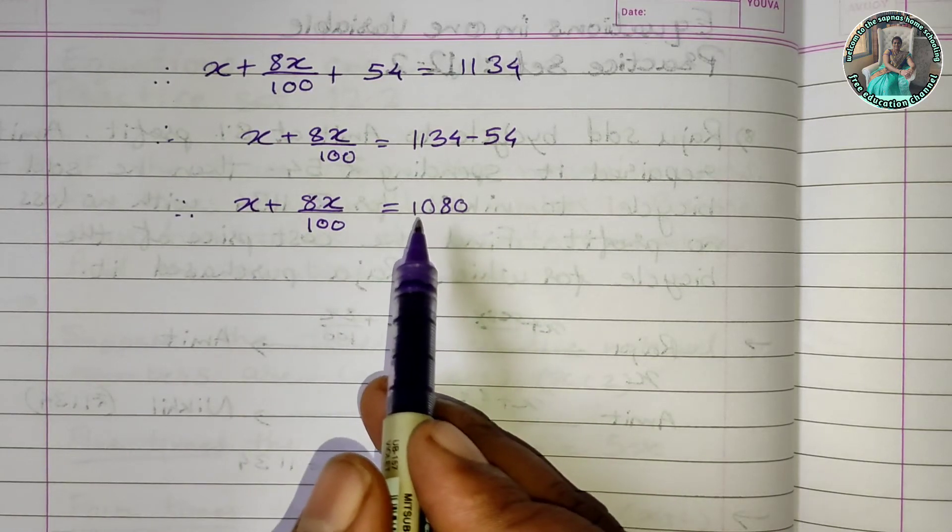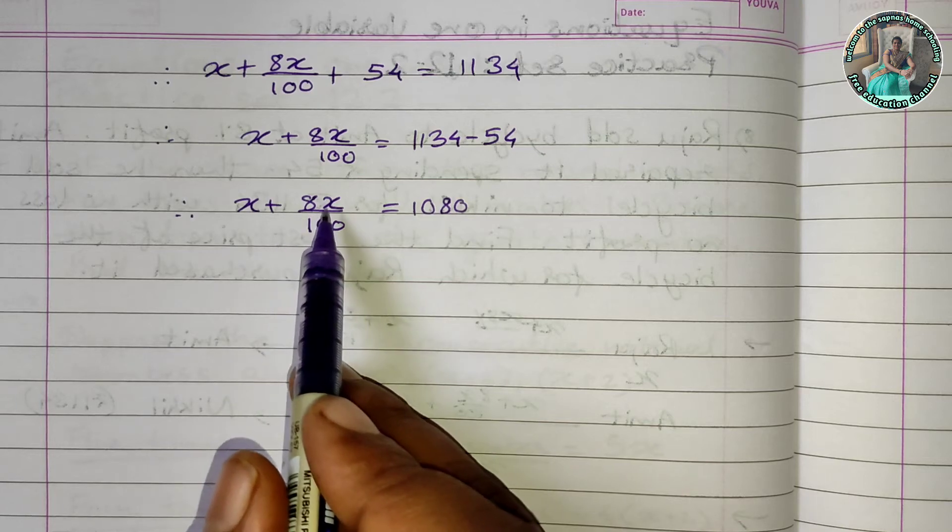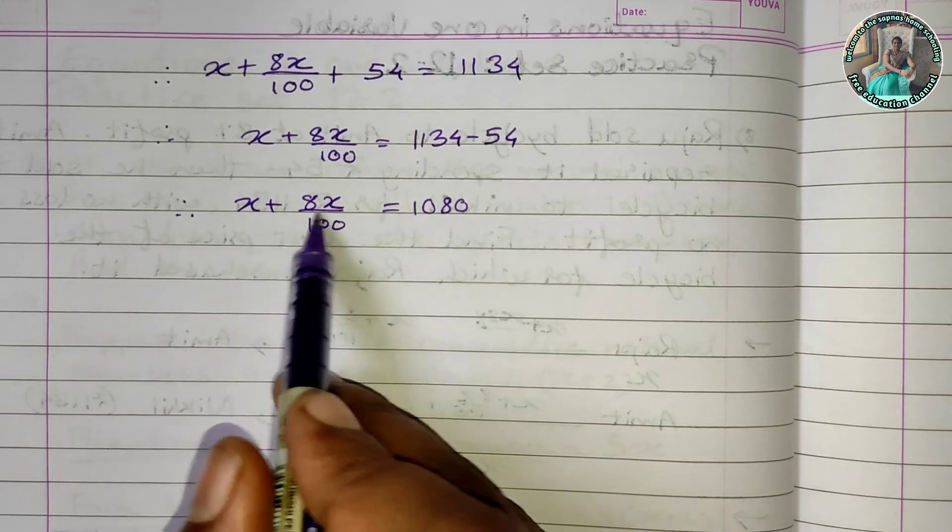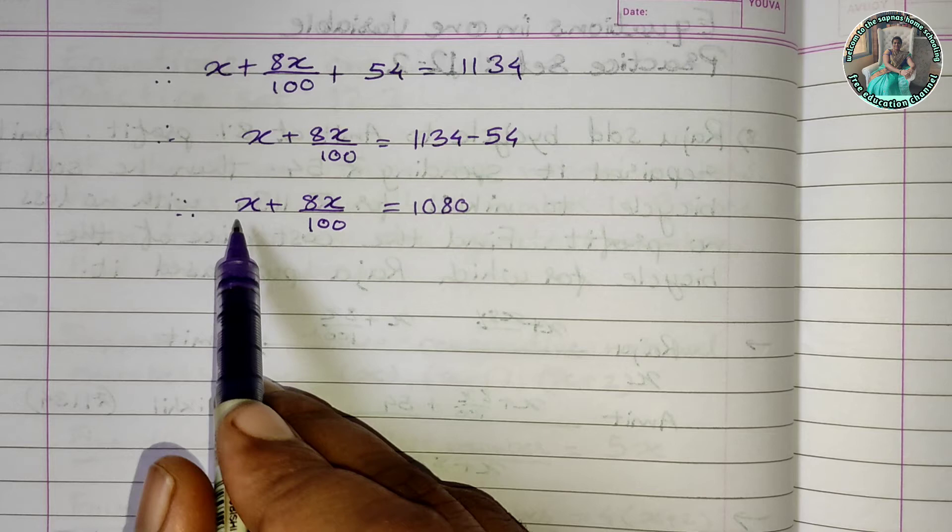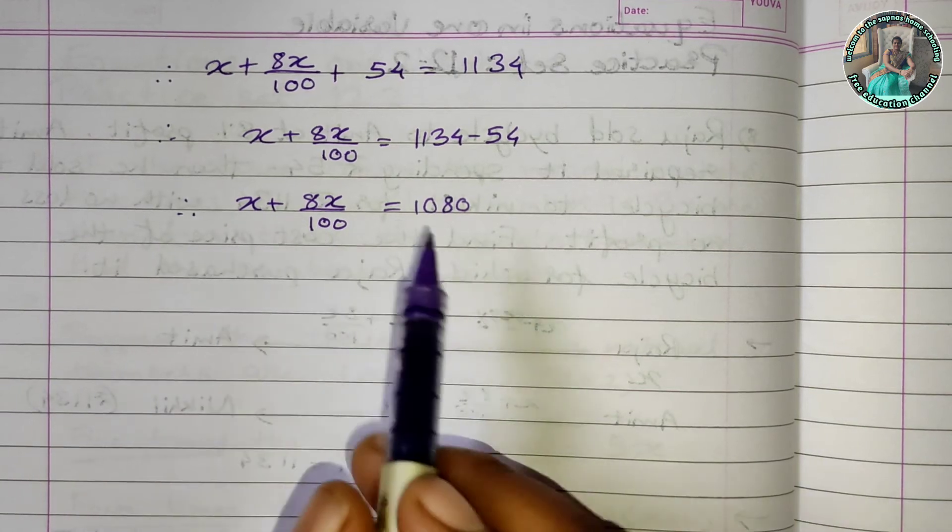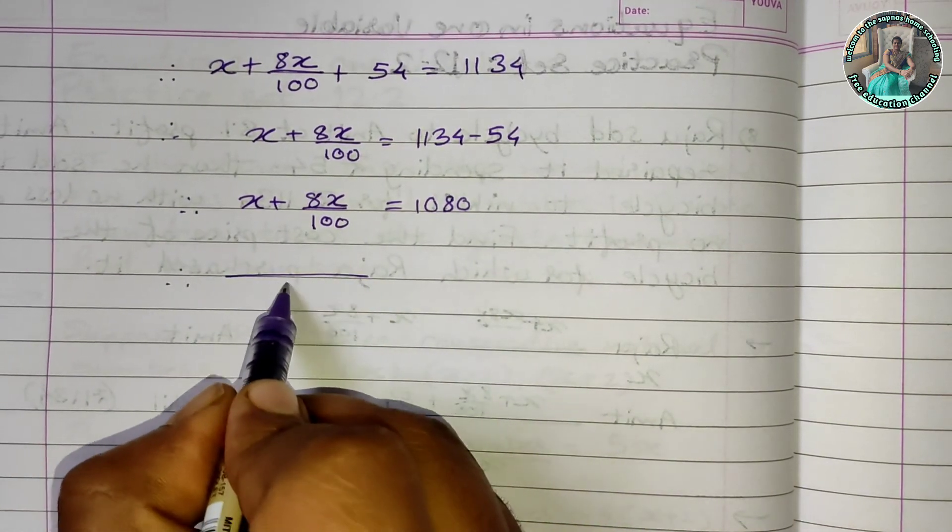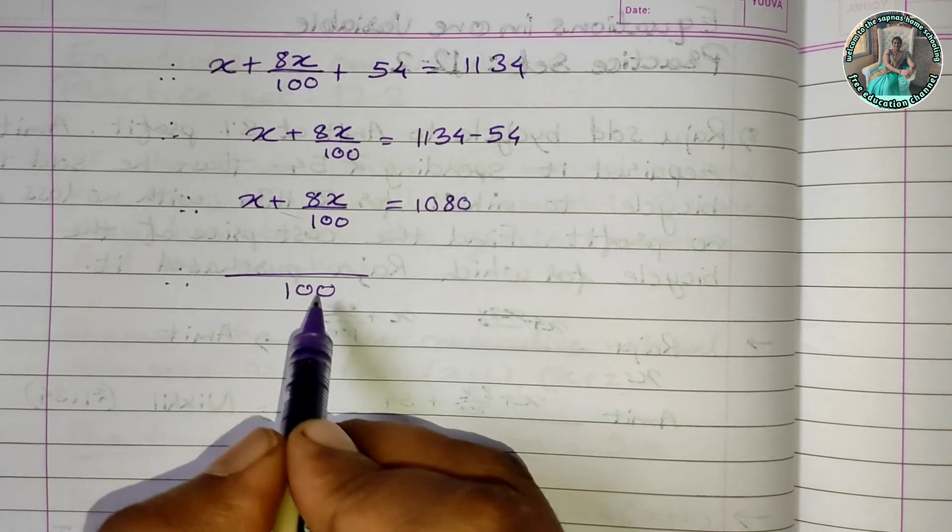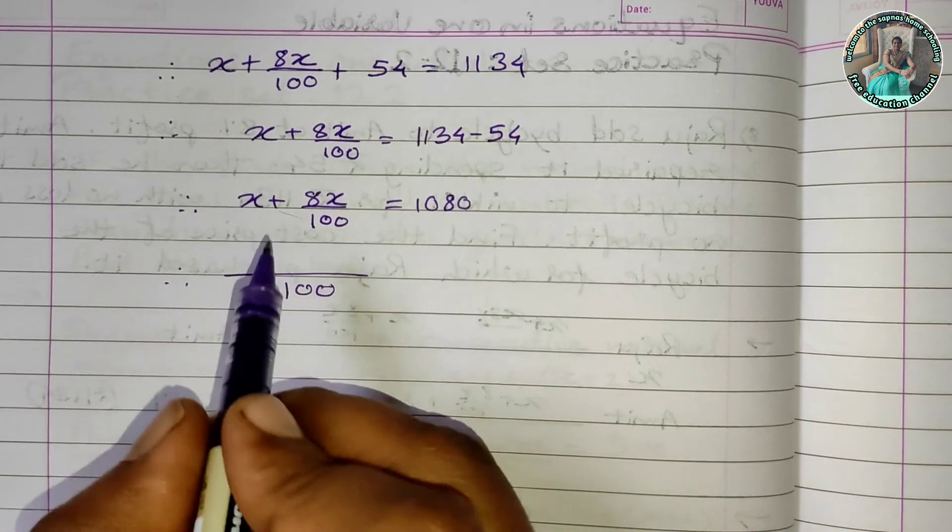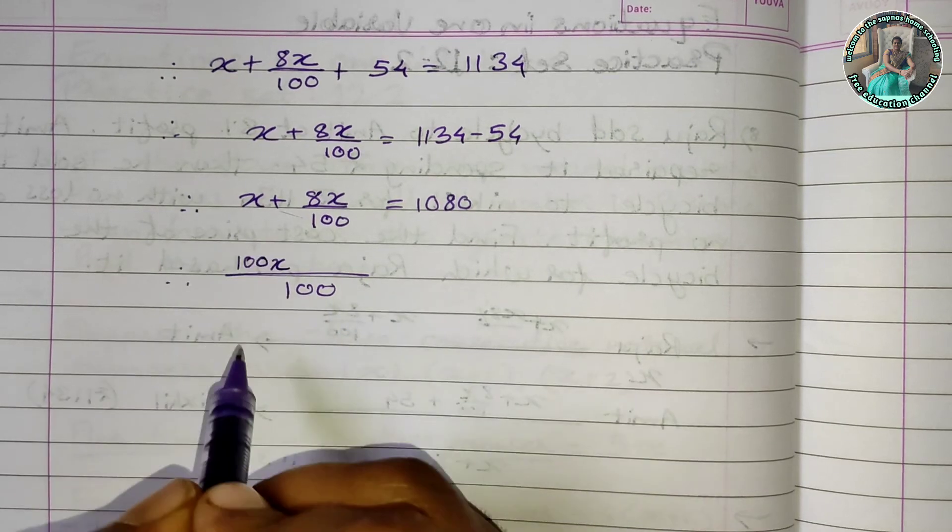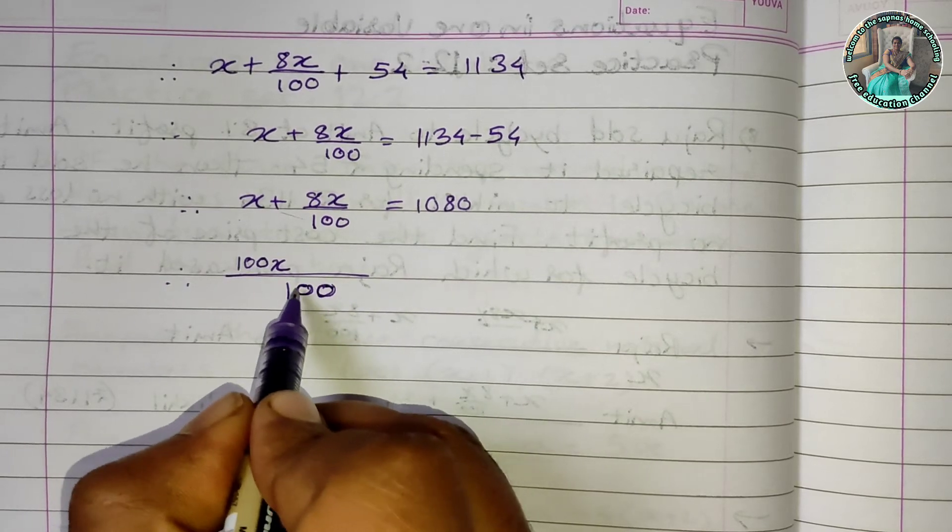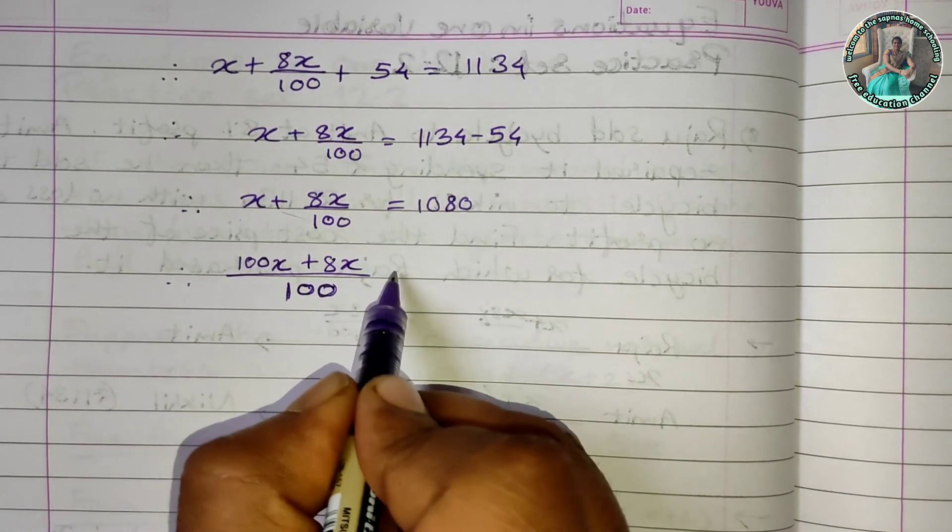We have to add x and 8x upon 100. To add with the same denominator, we will multiply the numerator and denominator of x by 100, giving us 100x upon 100. So 100x upon 100 plus 8x upon 100 equals 1080.